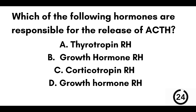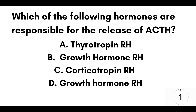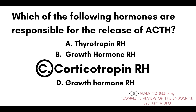Question number five: which of the following hormones are responsible for the release of ACTH — adrenocorticotropic hormone? A) Thyrotropin releasing hormone. B) Growth hormone releasing hormone. C) Corticotropin releasing hormone. Or D) Growth hormone releasing hormone. Our answer here is C, corticotropin releasing hormone.